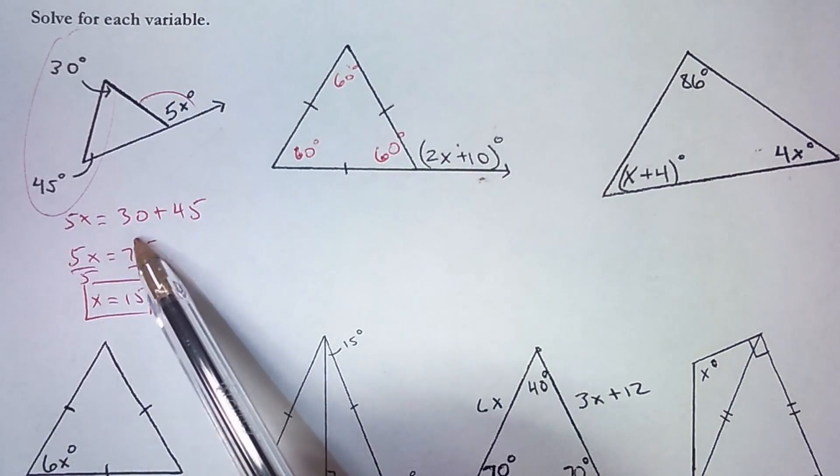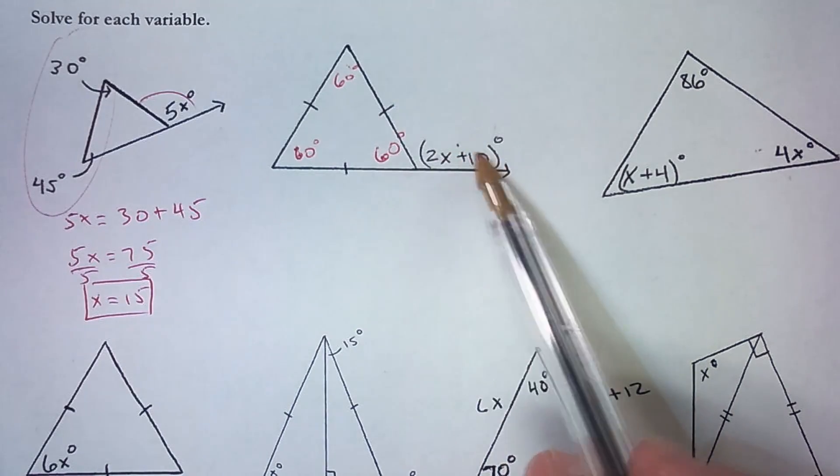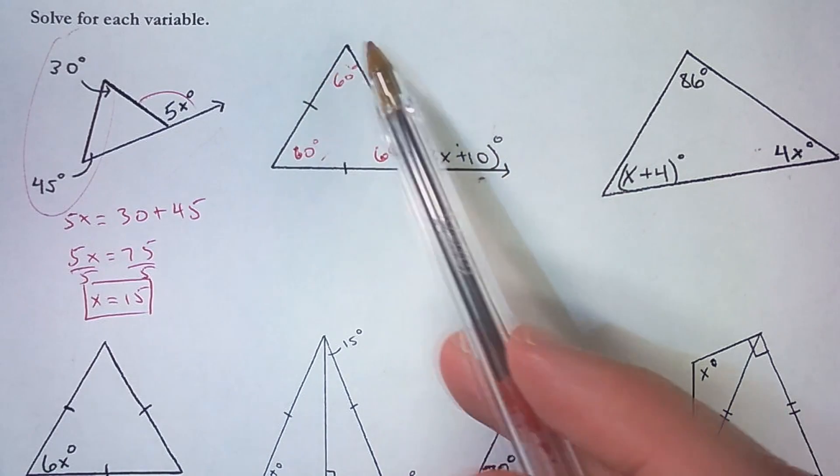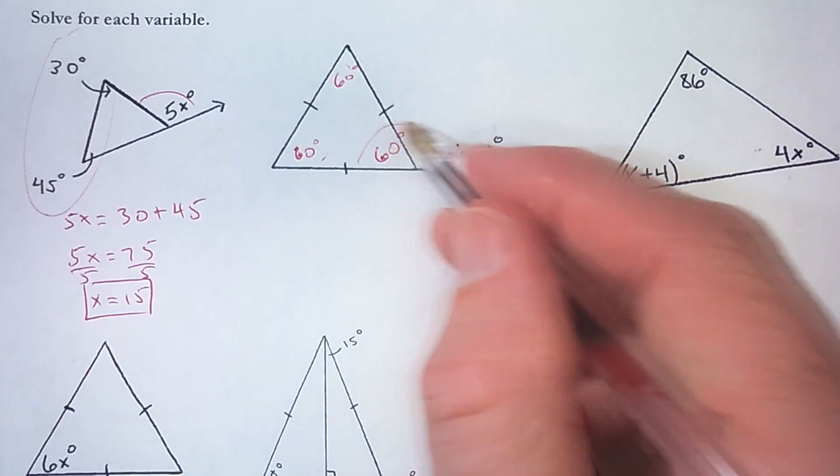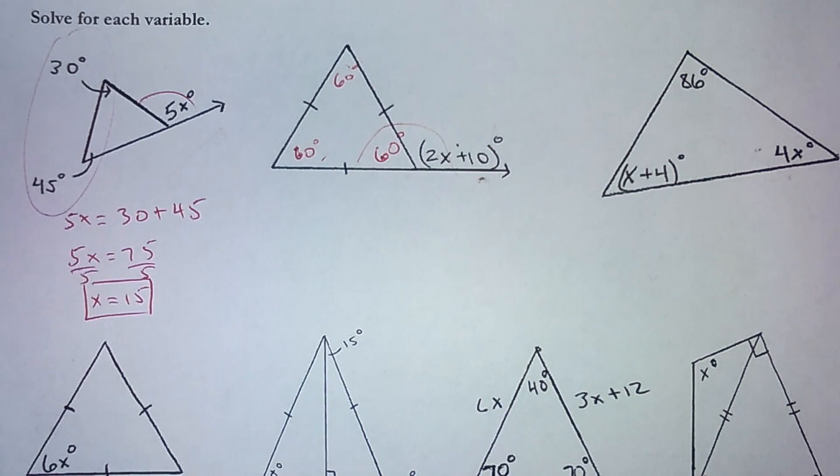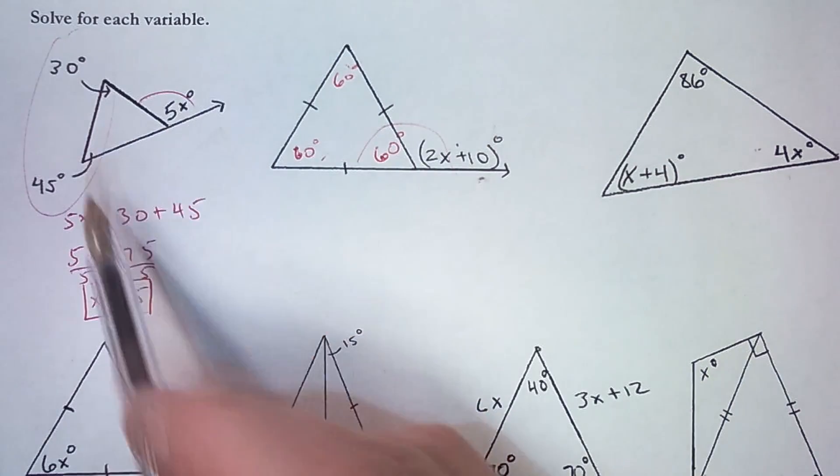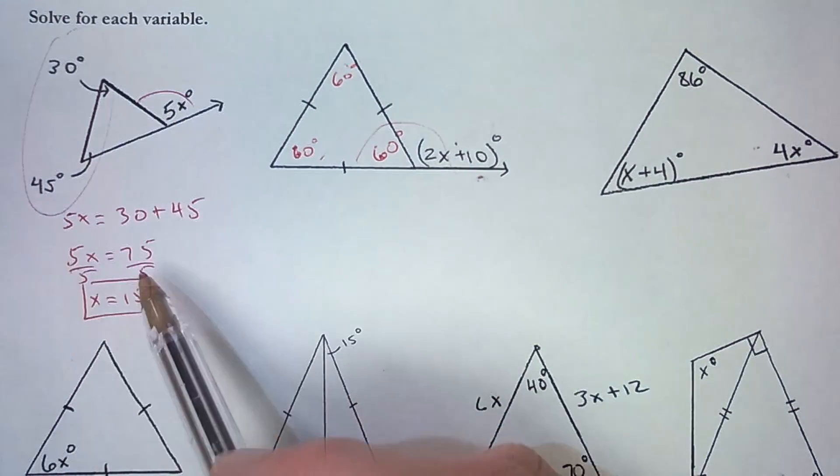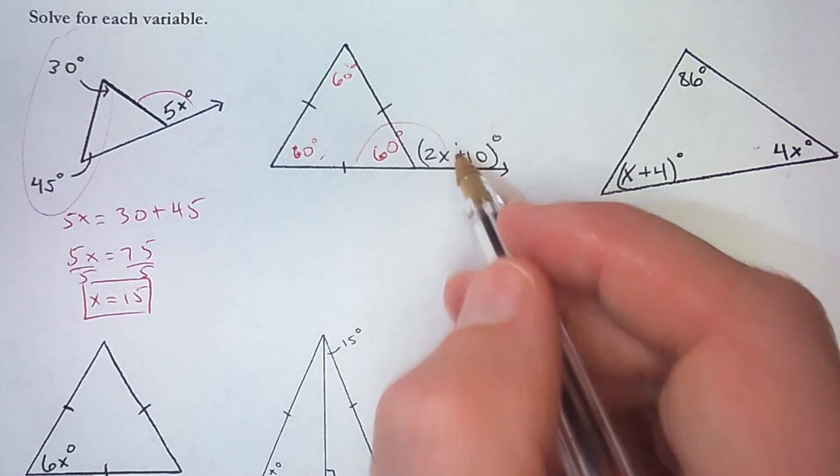So I could do just like this, I could do 2x plus 10 equals 60 plus 60, or I could use this linear pair here and say they add up to 180. Let's do that since we've already done the other way. Let's do this method here with a linear pair.